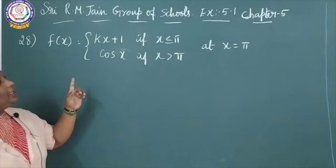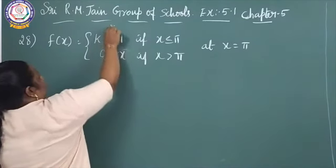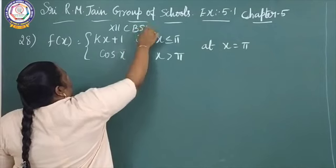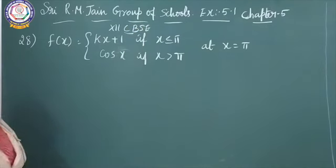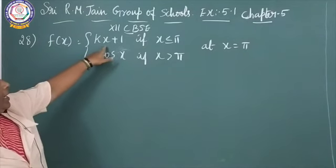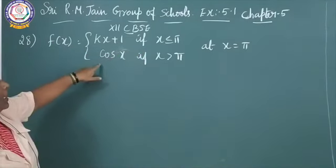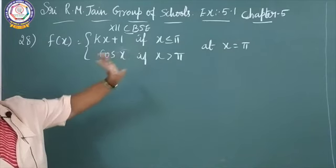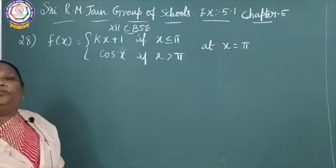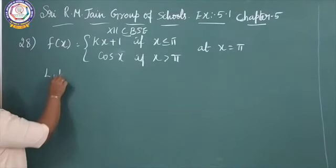This is 12th standard CBSE, Chapter 5, sum 28. f of x equals kx plus 1 if x is less than or equal to pi, and cos x if x is greater than pi. At x equal to pi, we should find out the value of k. Let's write what we need to do first.